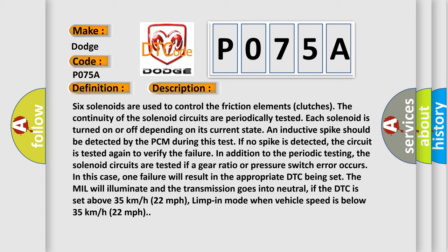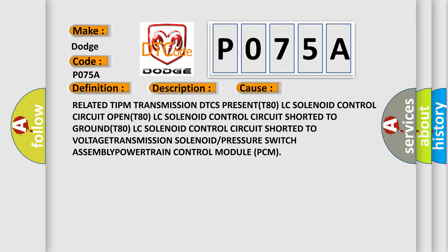If no spike is detected, the circuit is tested again to verify the failure. In addition to periodic testing, the solenoid circuits are tested if a gear ratio or pressure switch error occurs — one failure will result in the appropriate DTC being set. The MIL will illuminate and the transmission goes into neutral if the DTC is set above 35 km/h (22 mph), or into limp-in mode when vehicle speed is below 35 km/h (22 mph).